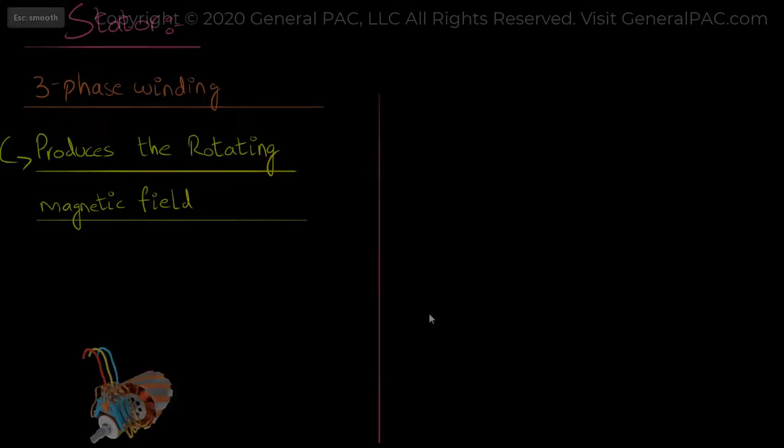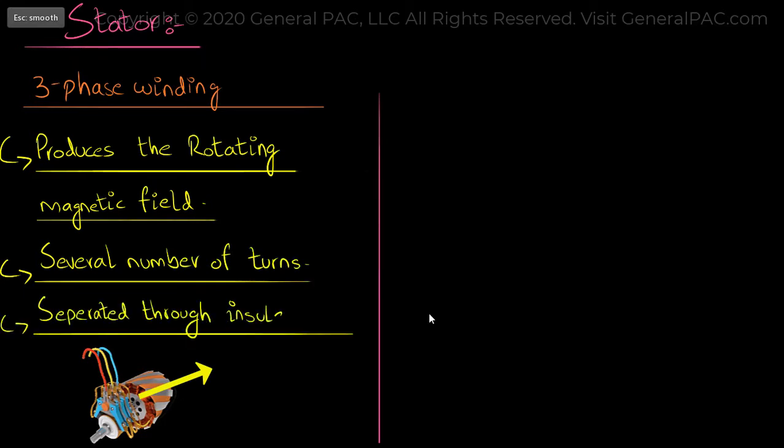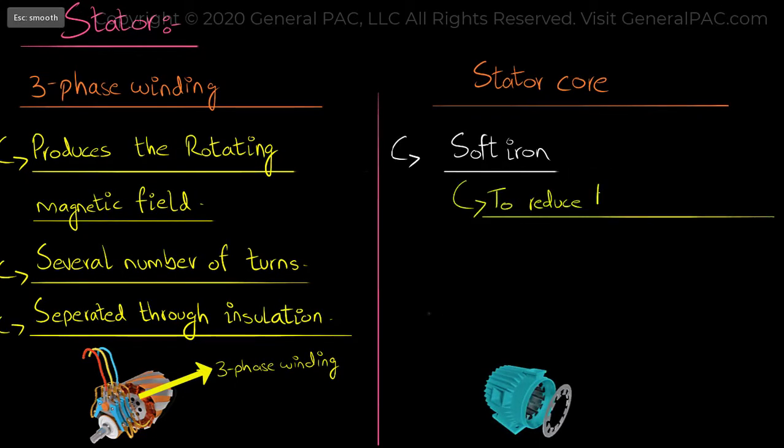Each of these phase windings have several number of turns and each turn is separated with the other through insulation. As we know that flux passes through a metal easily as compared to air, to complement the stator windings we have the stator core which consists of soft iron in order to reduce hysteresis losses and it is laminated so that eddy current effects can be reduced.